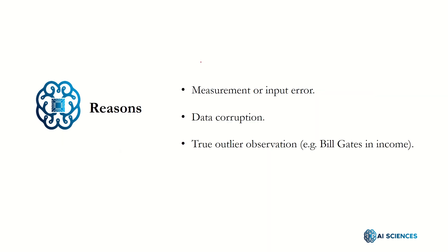Now let's see why outliers come into our data. One reason can be a measurement error — the measuring tool can be wrong. If your tool is wrong, that can be a reason for an outlier. Maybe your data is corrupt; that can also produce outliers. And maybe the measuring tool is fine and data is not corrupt, but still outliers are there. For example, if we are measuring data of the general public's income, the income of Bill Gates would be sort of an outlier, because Bill Gates used to be the richest man in the world.